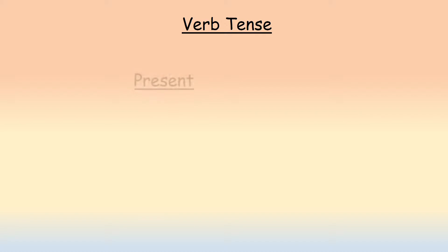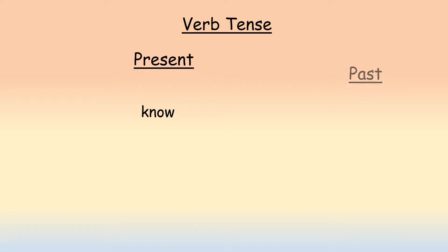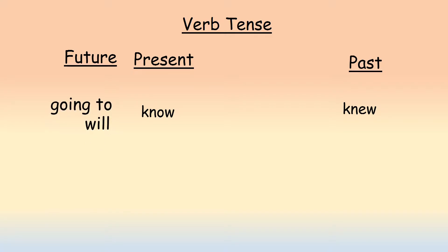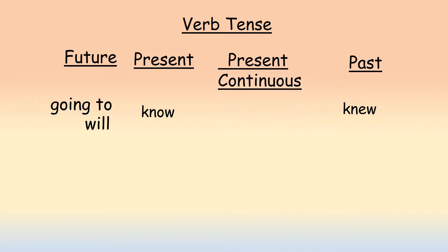Verb tense: present tense — 'know'; past tense — 'knew'; future tense — 'going to know' and 'will know'. Present continuous tense: the verb 'know' is not used in present continuous tense. 'I know' is correct. 'I knew' is correct. 'I am knowing' is not correct. We only use 'know' in present, past, and future.